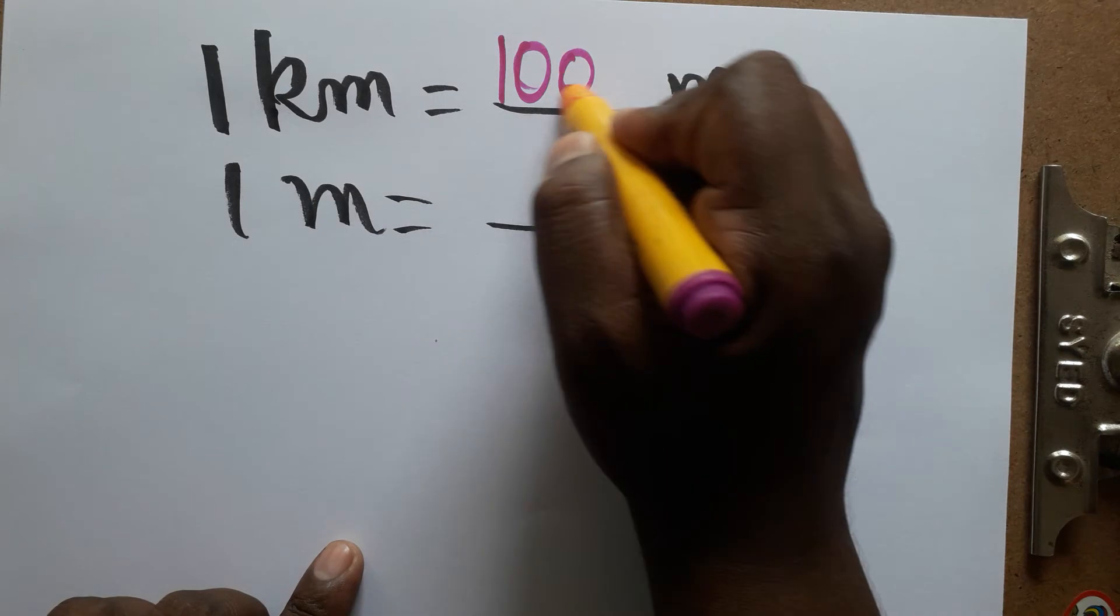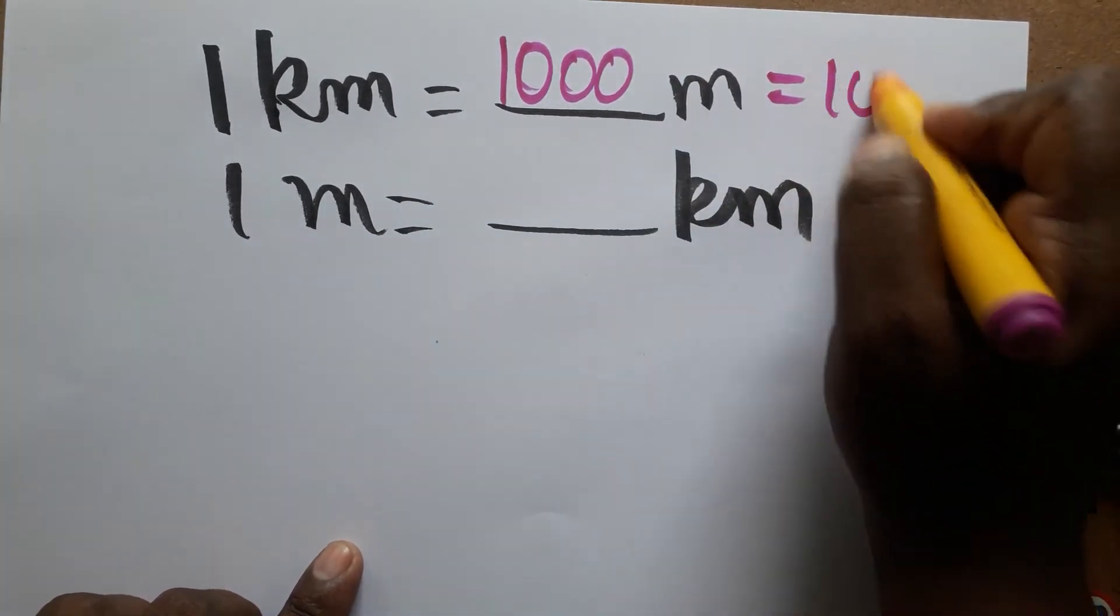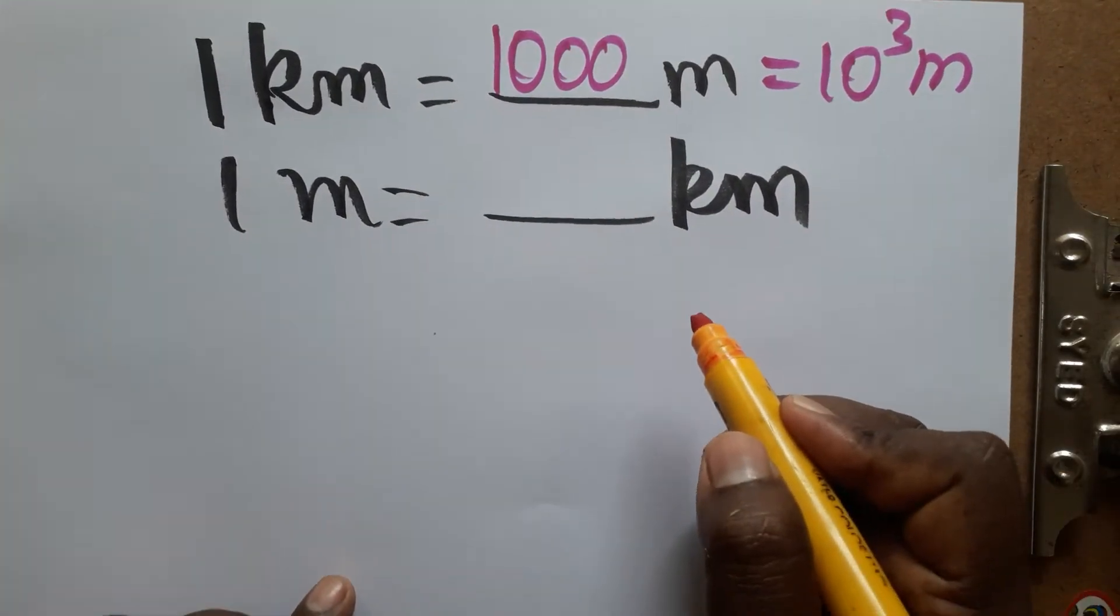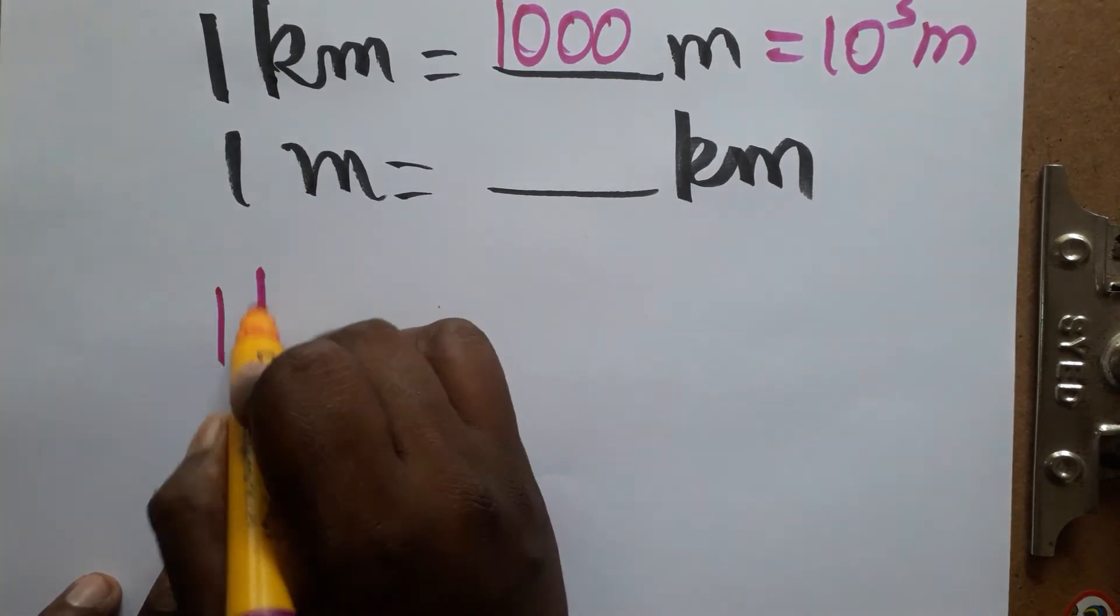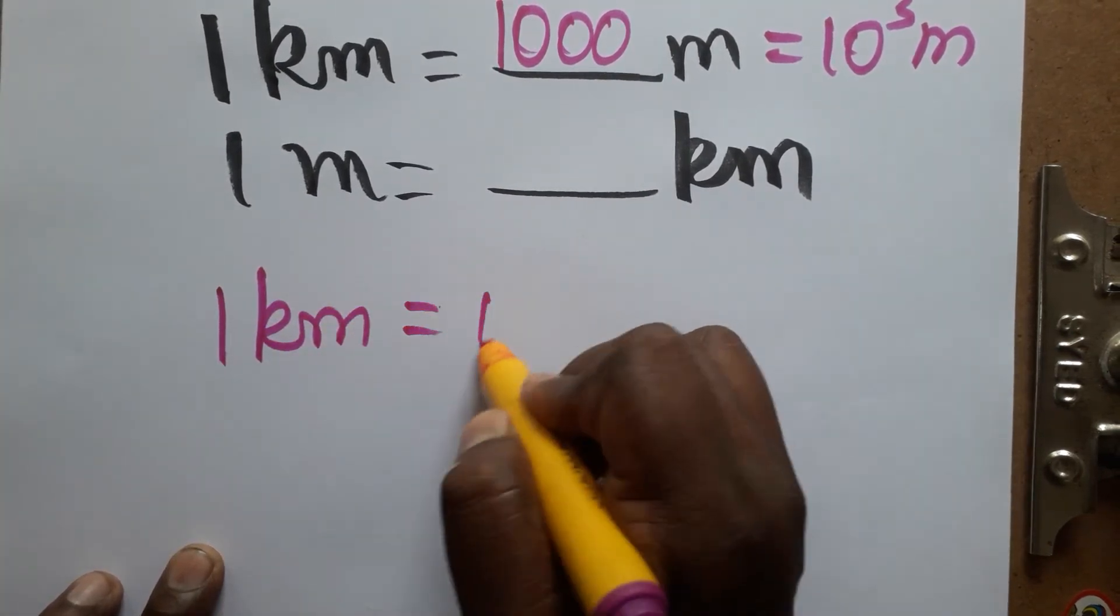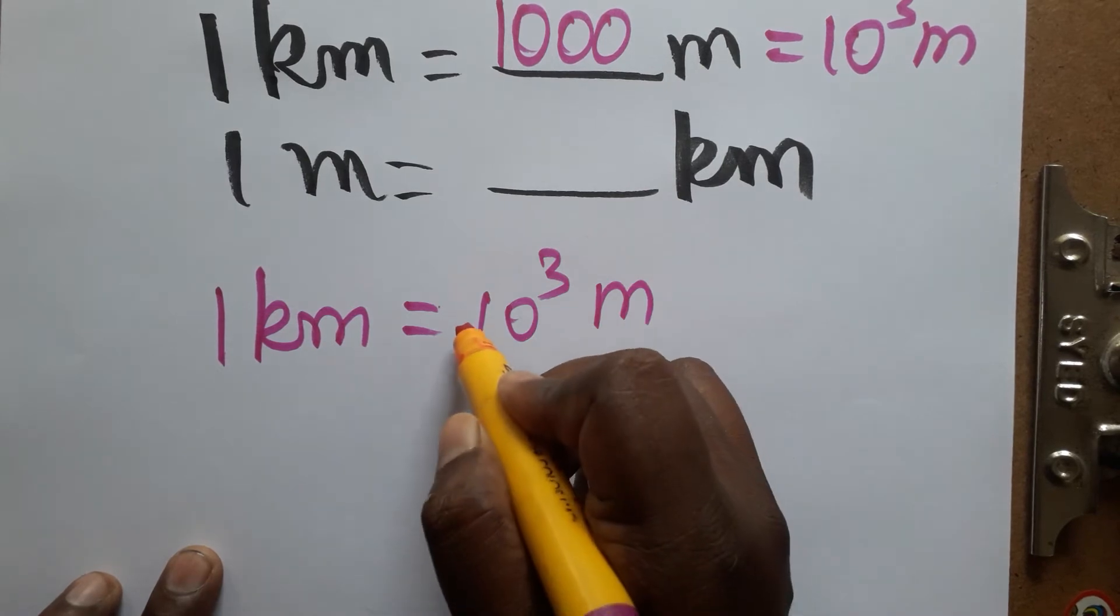It's very easy, it's a thousand meters. We can write this as 10 power 3 meters. Now, one meter is how many kilometers? Okay, so one kilometer is equal to 10 power 3 meters. I am bringing it as a denominator.